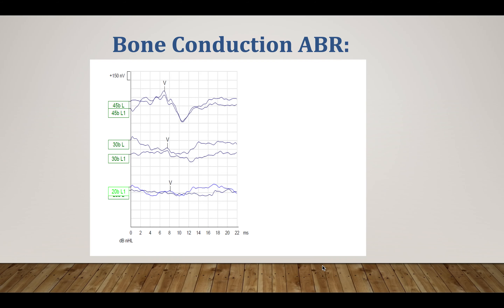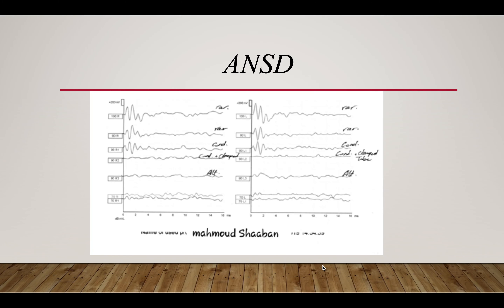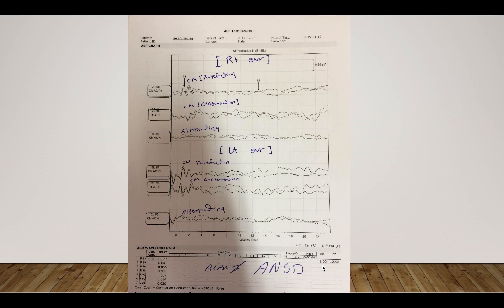This is a case of auditory neuropathy spectrum disorder. As we see here, using rarefaction polarity, then condensation polarity with reverse polarity, the cochlear microphonic disappears at alternating polarity. In another case of auditory neuropathy spectrum disorder, rarefaction polarity, condensation polarity, and disappearance of the cochlear microphonic at alternating polarity are again demonstrated.